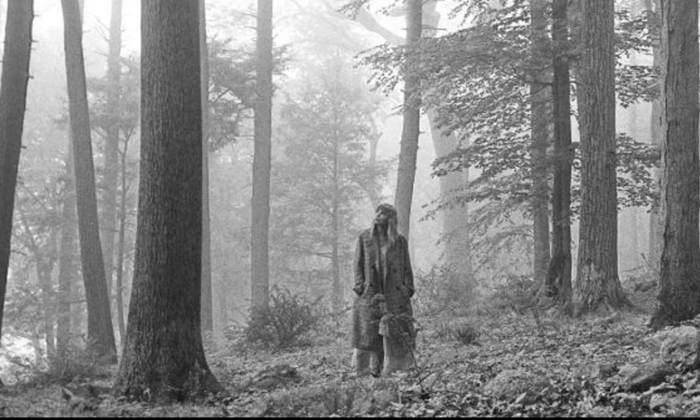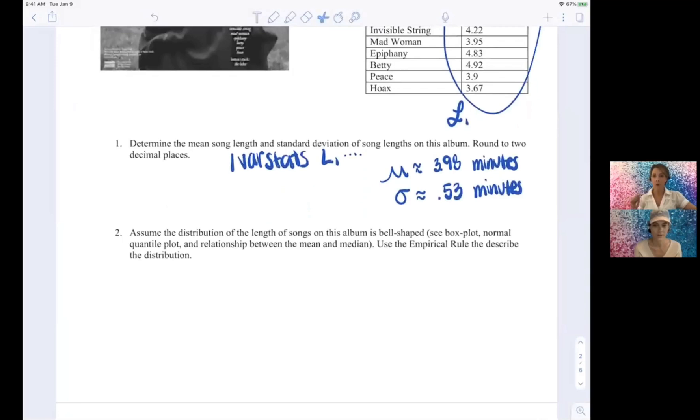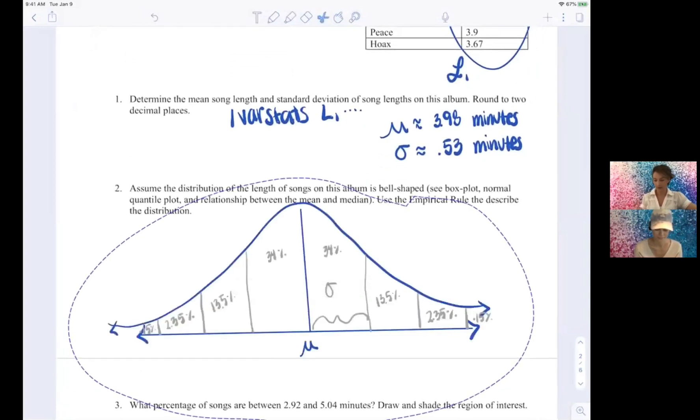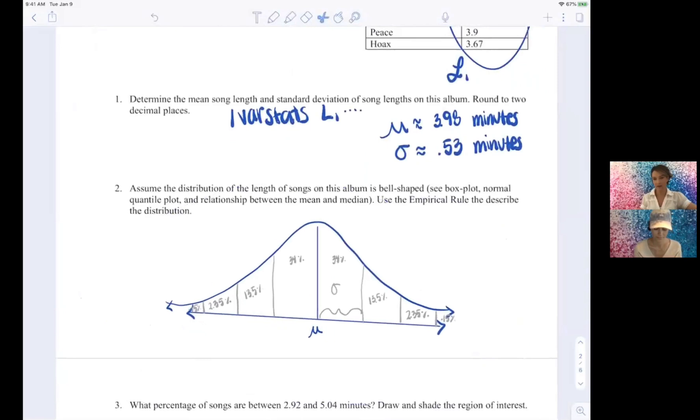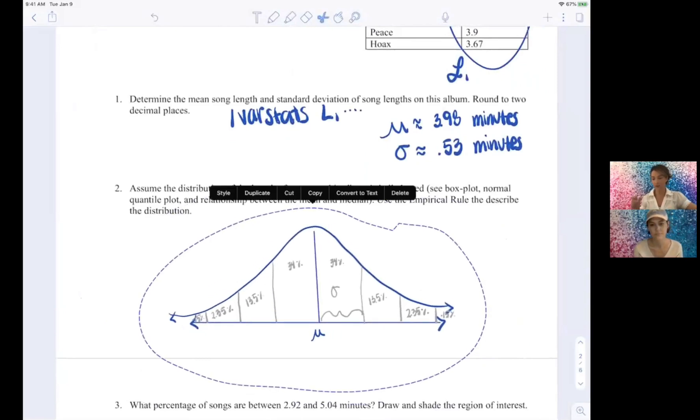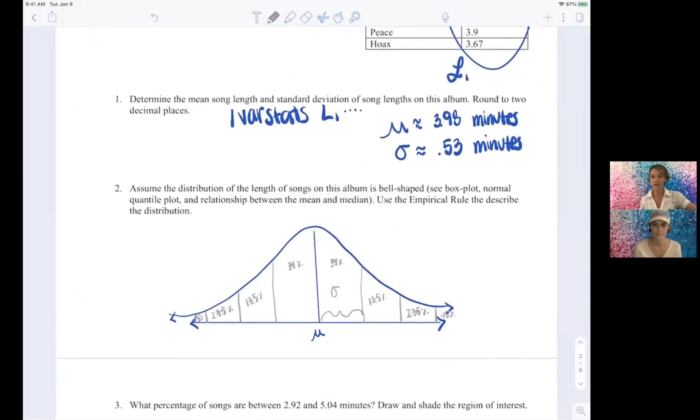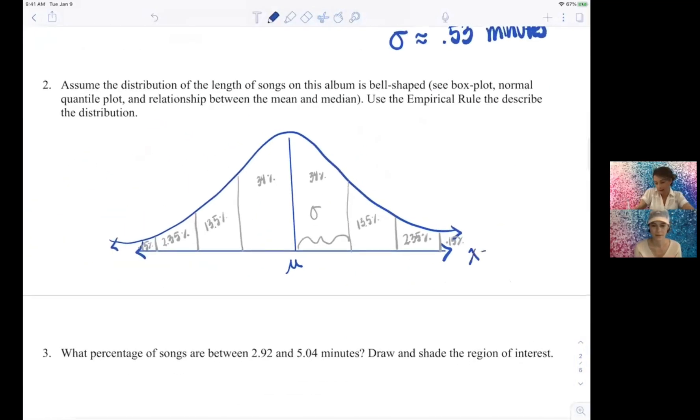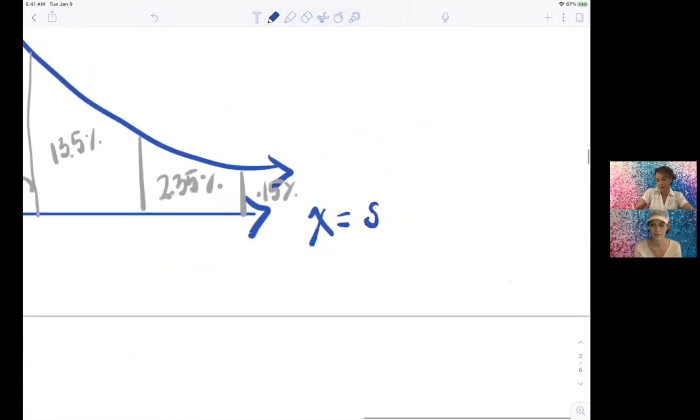Okay, basically here's a picture of our nice empirical rule, and all we have to do is put in the Taylor Swift Folklore specific. What we're graphing along the horizontal axis is our length of each song.